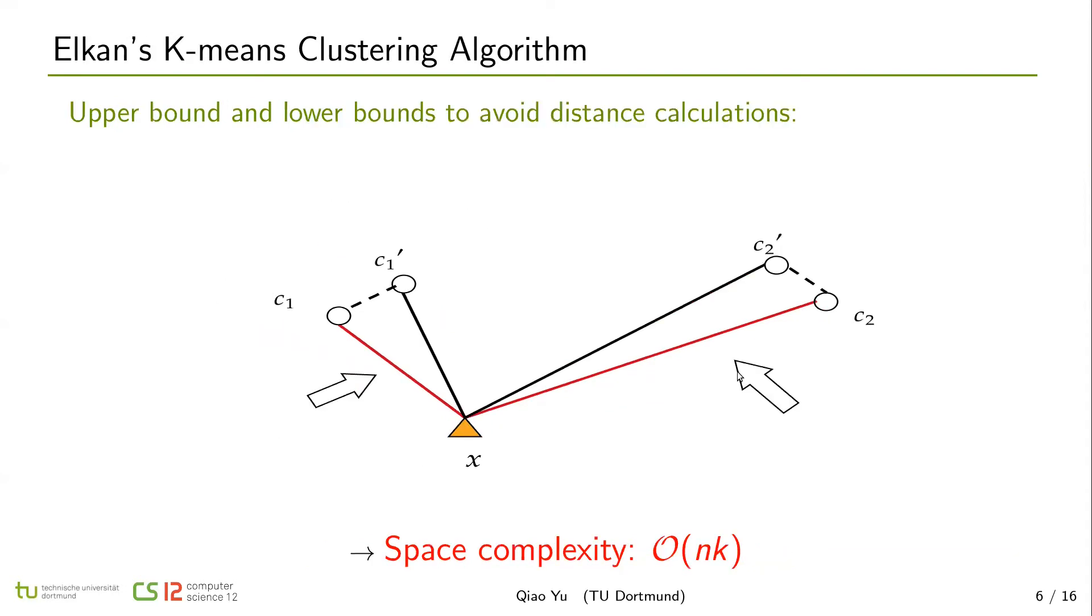To reduce these calculations, Elkan's k-means optimized k-means using triangle inequalities. In this example, we first calculate distances from x to c1 and x to c2. So x c1, at this example, is closer and x is assigned to c1.